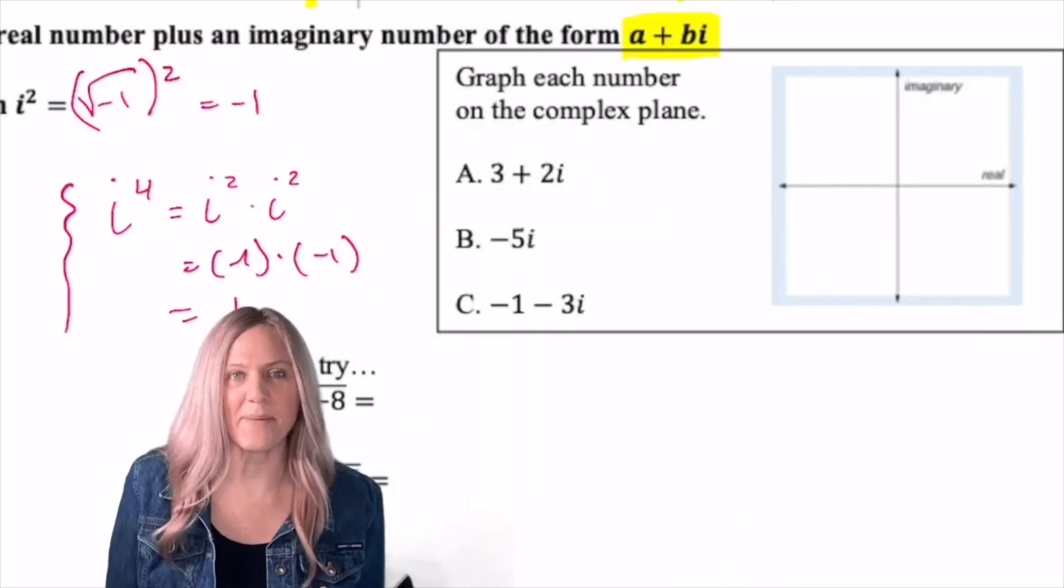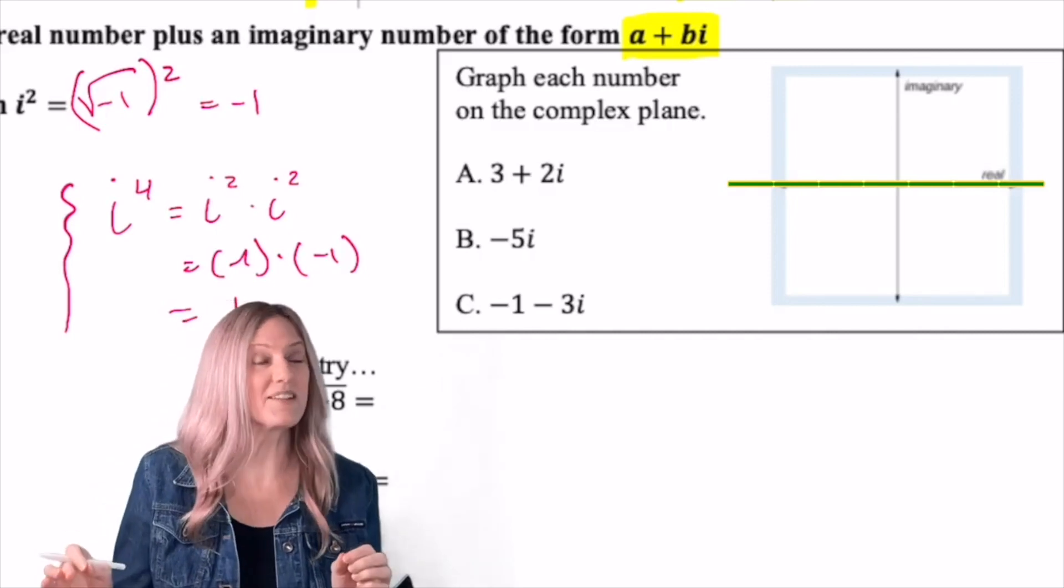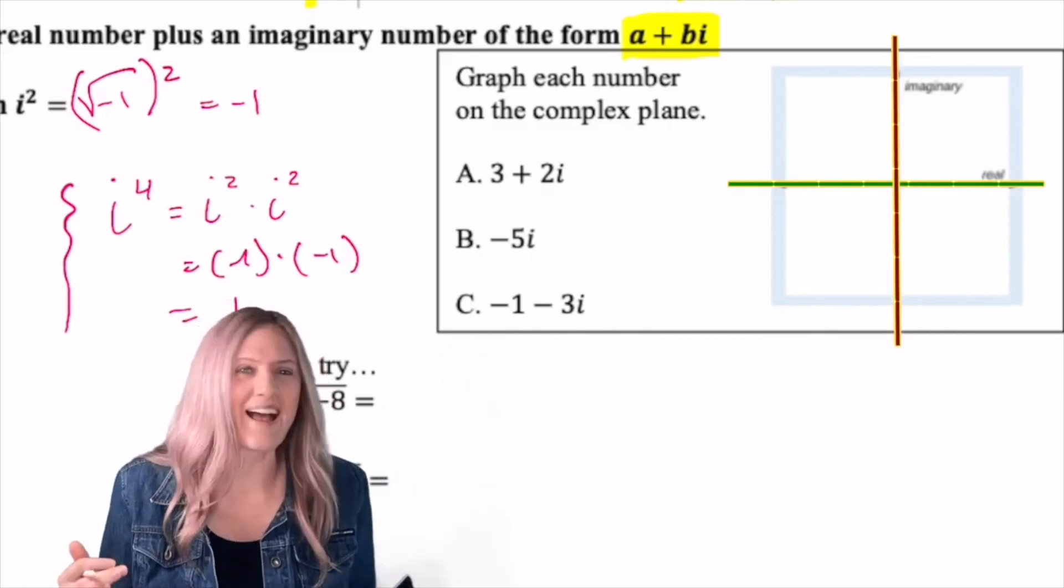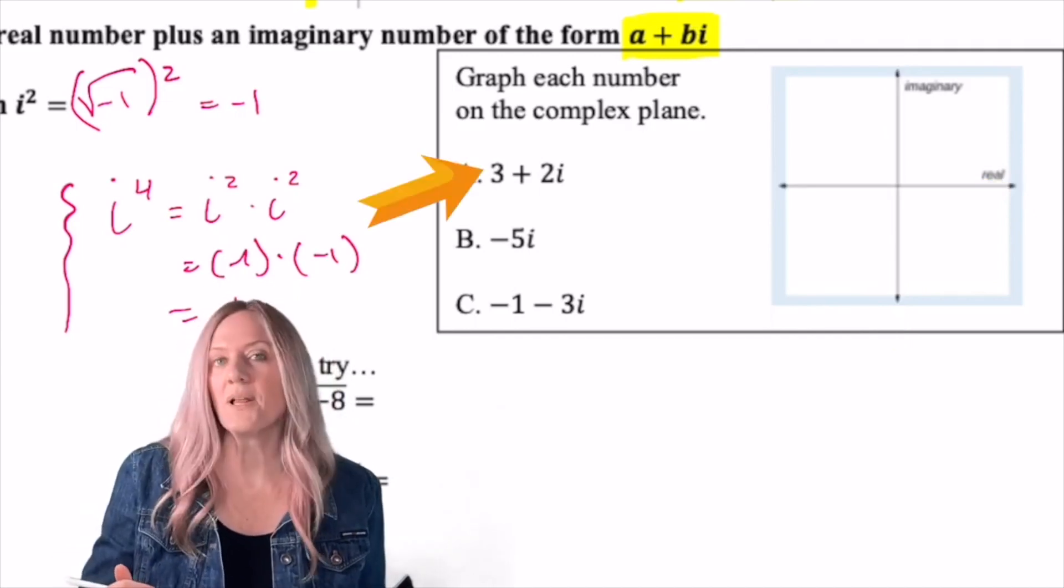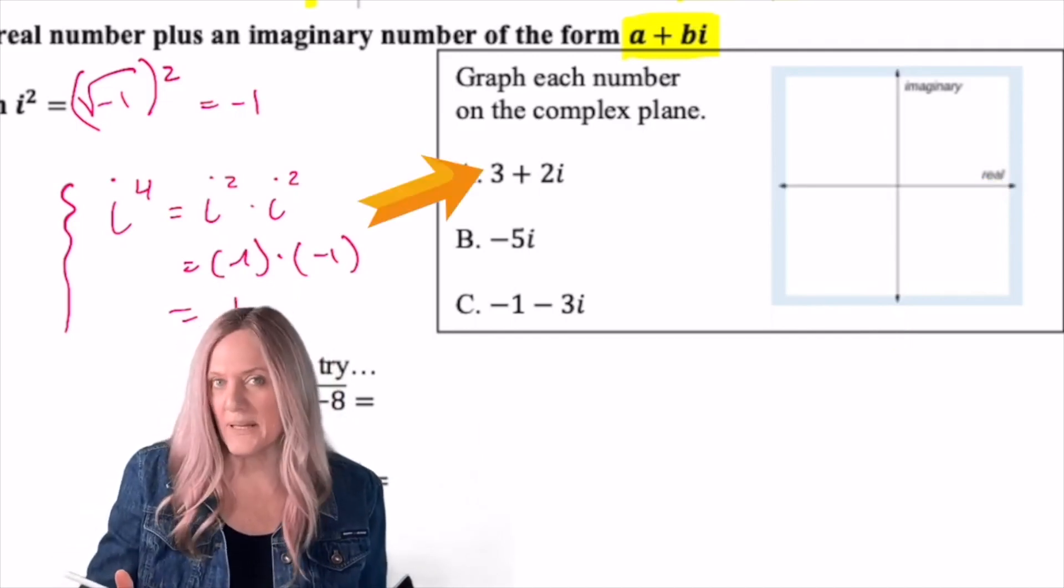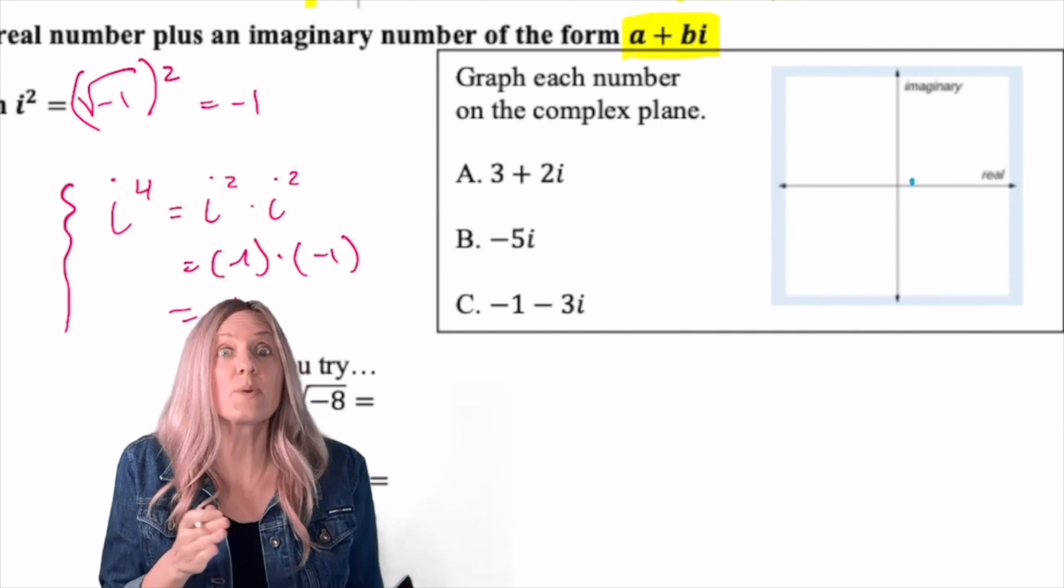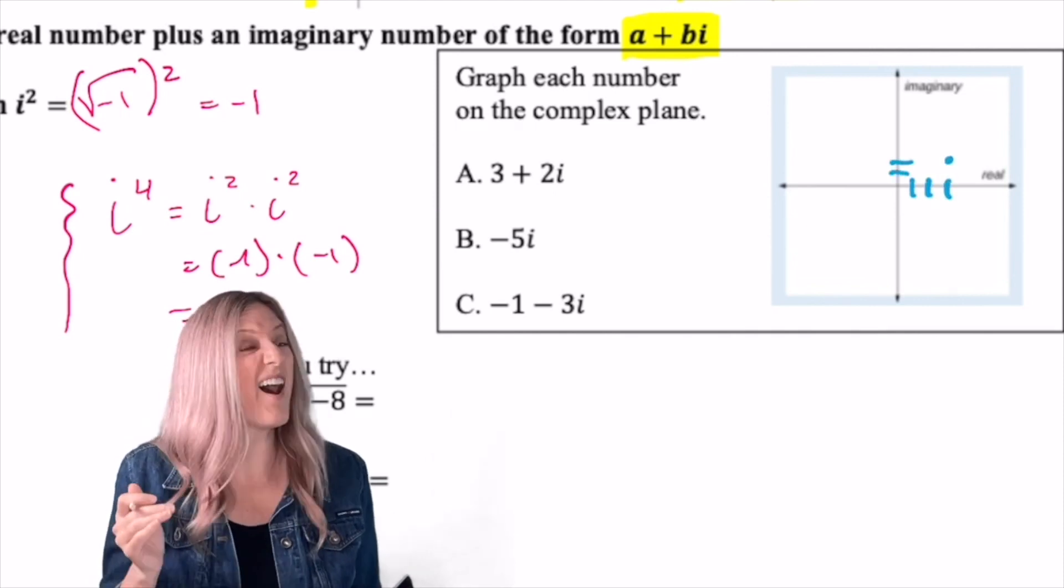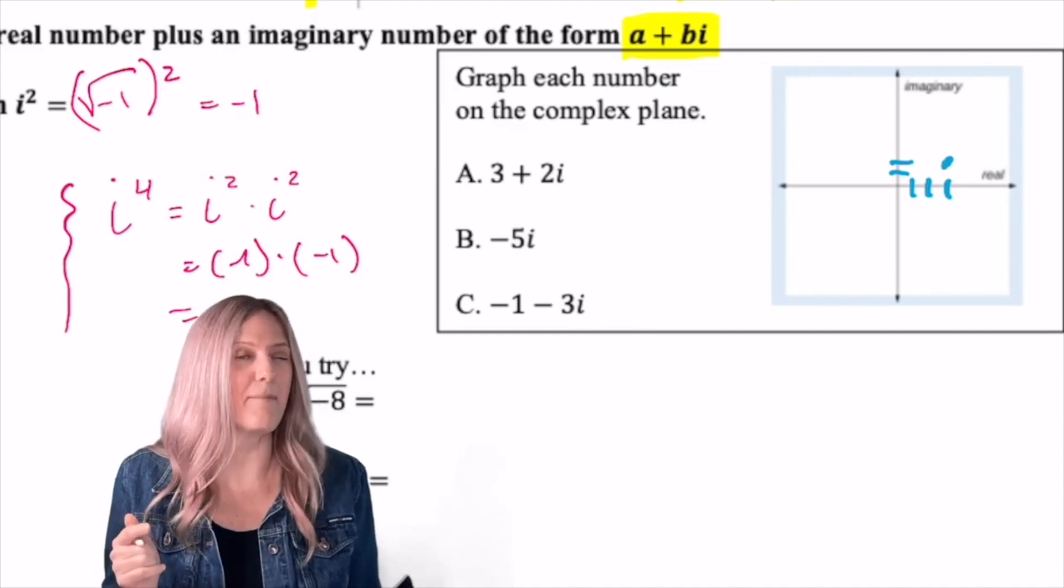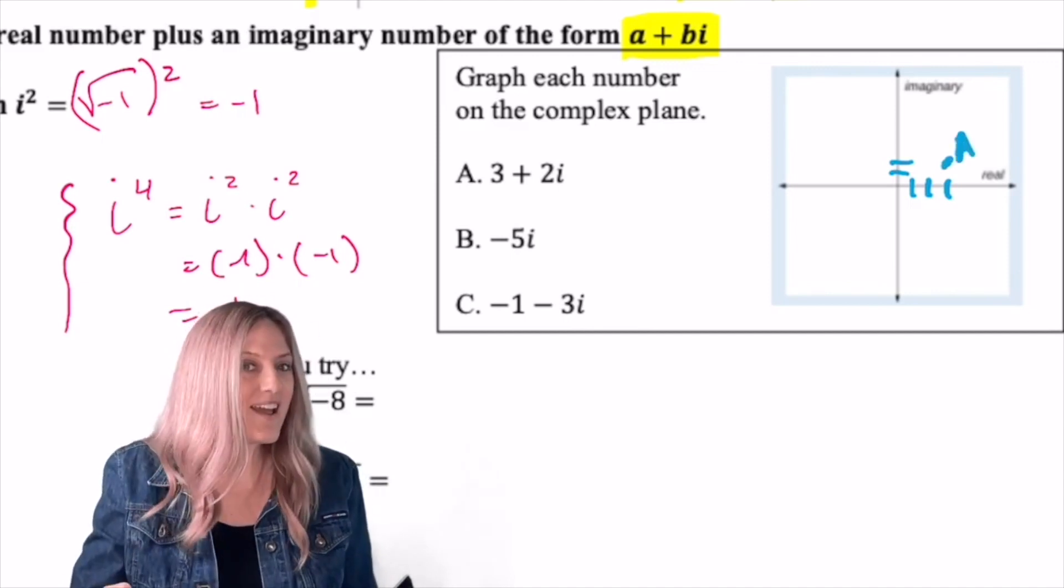Do you know we can graph complex numbers? The horizontal axis represents the real number line and the vertical axis represents the imaginary. So to plot the point 3 plus 2i on the complex plane, simply move three units to the right on the real number axis and then up two units on the imaginary axis. There's point A.